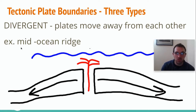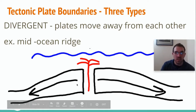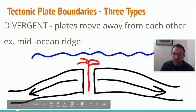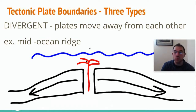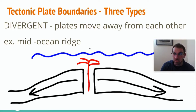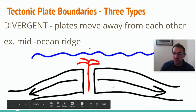An example — because there's always going to be an example to go along with it — is the mid-ocean ridge. If this is a mid-ocean ridge, notice it's underwater. I would like for you to draw this. You should have colored pencils. I'd like you to use blue to represent the water, red to represent the magma and lava, and black to represent the tectonic plates.